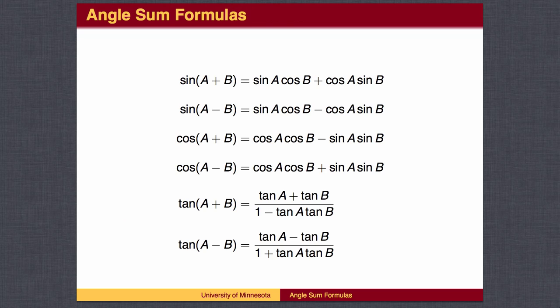Here are the formulas for the sine, cosine, and tangent when adding or subtracting angles. Note that on the left-hand side you are asked to add or subtract the angles and then find the value of a trig function. On the right-hand side, you have three or four numbers found from trig functions that are then added, subtracted, multiplied, and divided to get the answer.